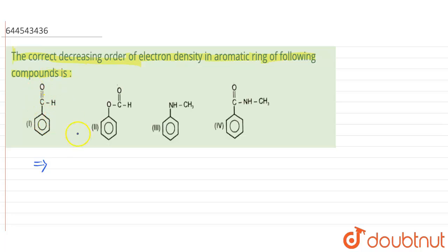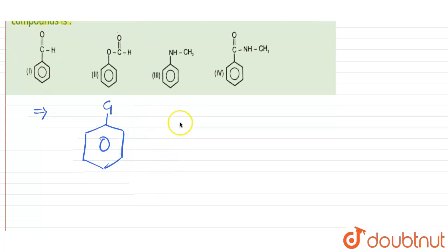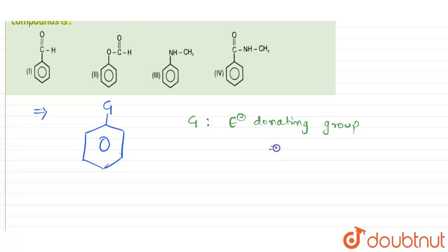If you have a benzene ring and a group G is attached to it — if this G group is an electron donating group, what will happen is it will donate its electrons to the benzene ring, which will increase the electron density.